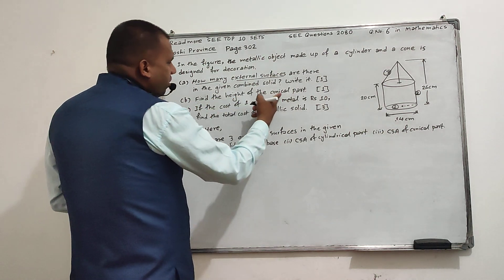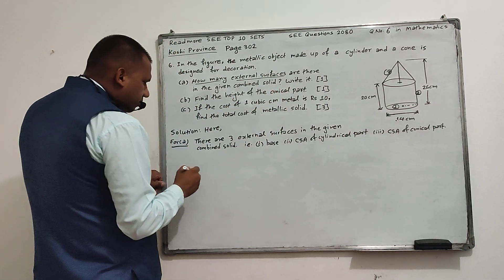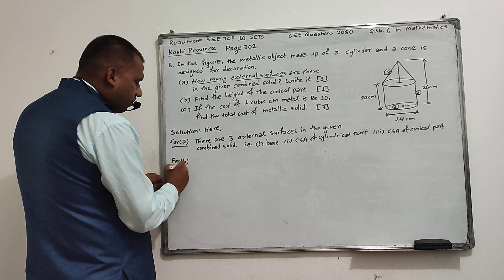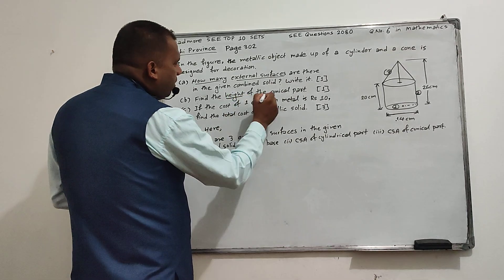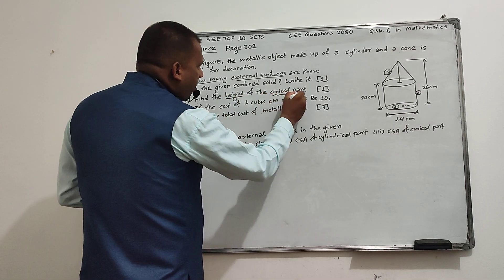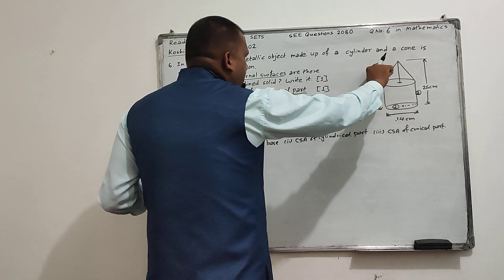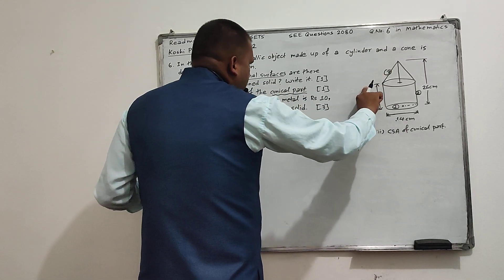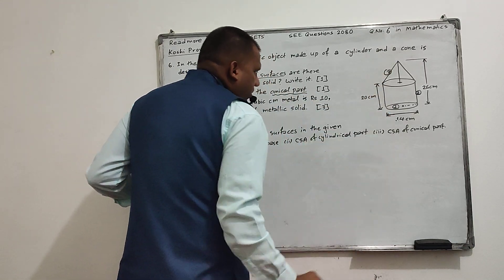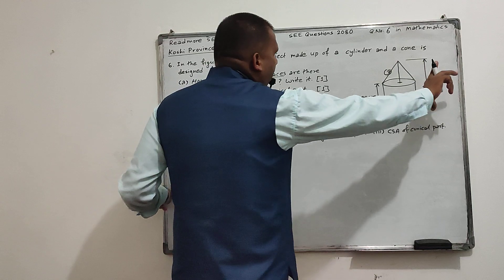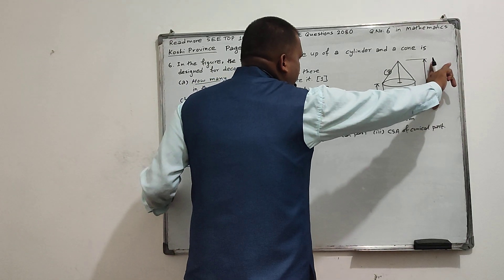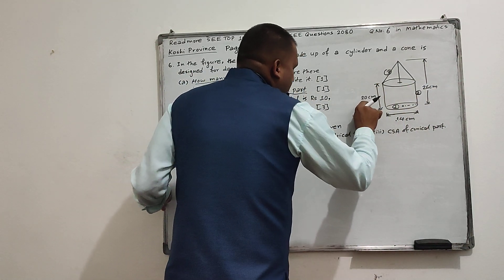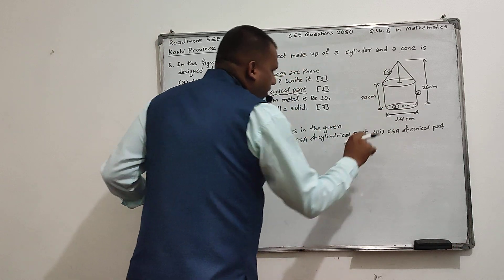Now find the height of the conical part. We have to find the height of the conical part. The upper part is the conical part and the lower part is the cylindrical part. The height of the conical part equals the total height of the combined solid, 26, minus the height of the cylindrical part, 20. So the height is 6 centimetres.